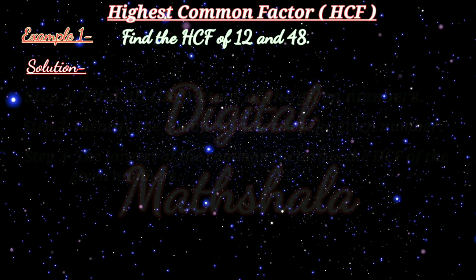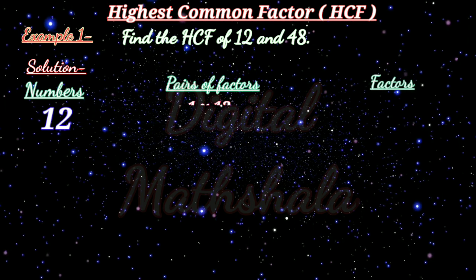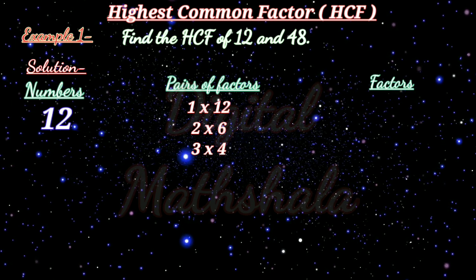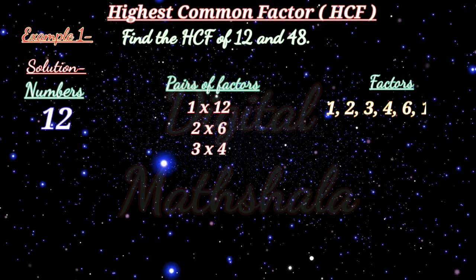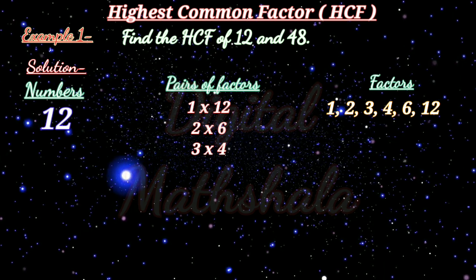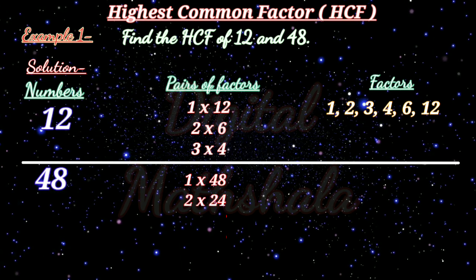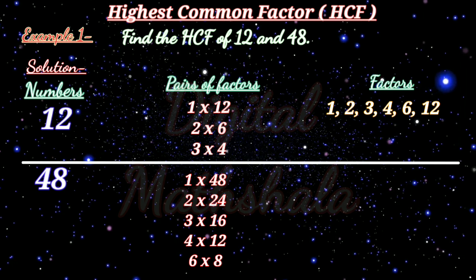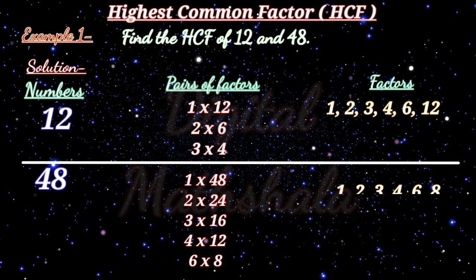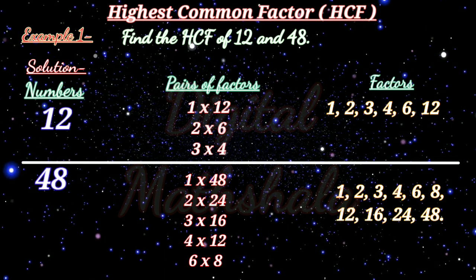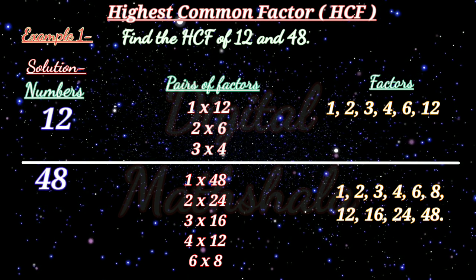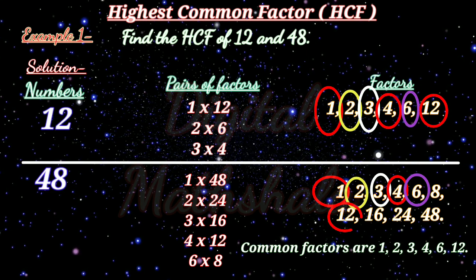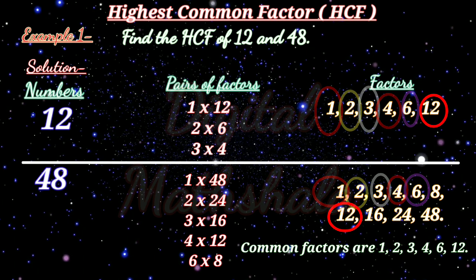Let us find the HCF of 12 and 48. The factors of 12 are found from pairs: 1×12, 2×6, 3×4. So factors of 12 are 1, 2, 3, 4, 6, 12. The factors of 48 are found from pairs: 1×48, 2×24, 3×16, 4×12, 6×8. So factors of 48 are 1, 2, 3, 4, 6, 8, 12, 16, 24, 48. The common factors are 1, 2, 3, 4, 6, and 12. The largest common factor is 12.